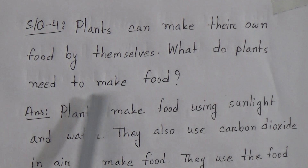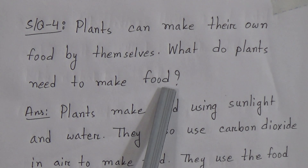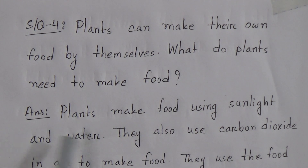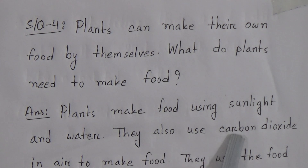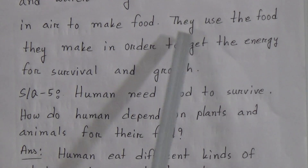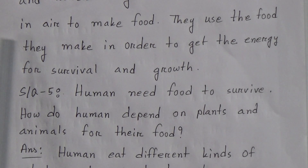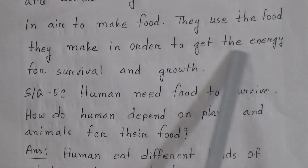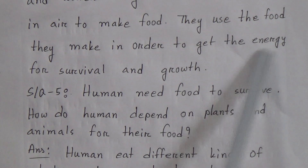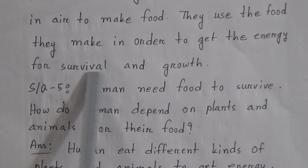Short question 4: Plants can make their own food by themselves. What do plants need to make food? Answer: Plants make food using sunlight and water. They also use carbon dioxide in air to make food. They use the food they make in order to get the energy for survival and growth.